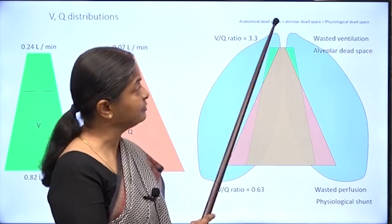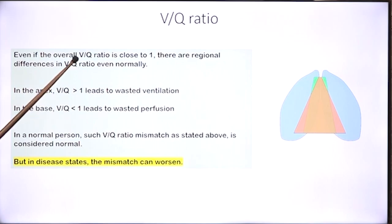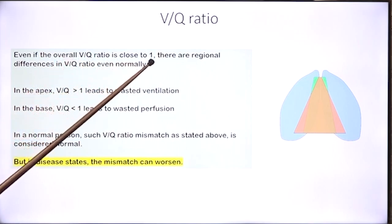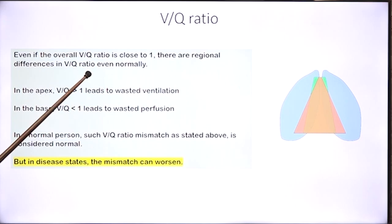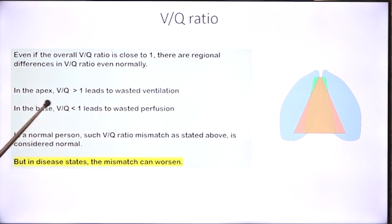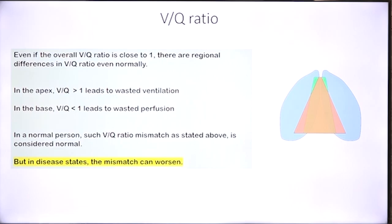The sum of alveolar and anatomical dead space is referred to as physiological dead space. The summary thus far is that even if the overall VQ ratio is close to 1 — we saw it is 0.8 — there are regional differences in the VQ ratio even normally. In the apex the ventilation perfusion ratio is more than 1, meaning there is wasted ventilation, and in the base the ratio is less than 1, meaning some perfusion does not participate in gas exchange. In a normal person such minimal VQ mismatch does not affect oxygen transfer and is considered normal.